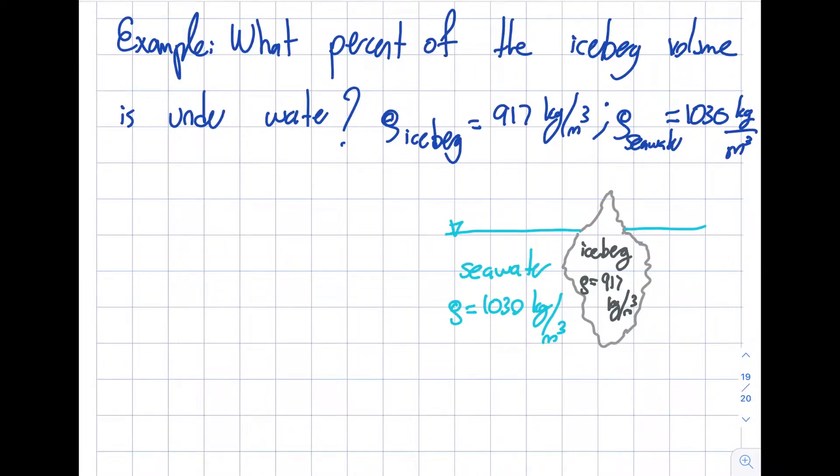As this is a fairly straightforward question in fluid mechanics, I only need the iceberg density, which is 917 kg per meter cubed, and I also need the density of the seawater.